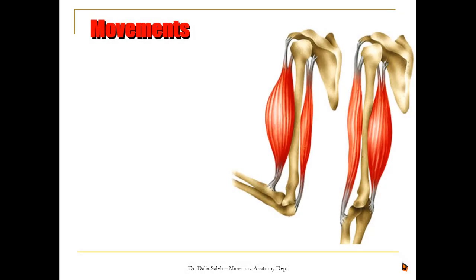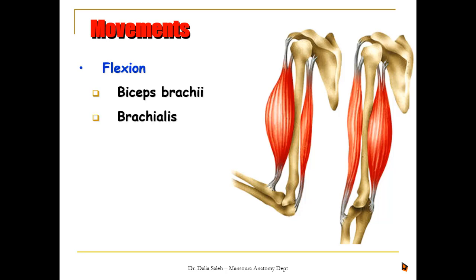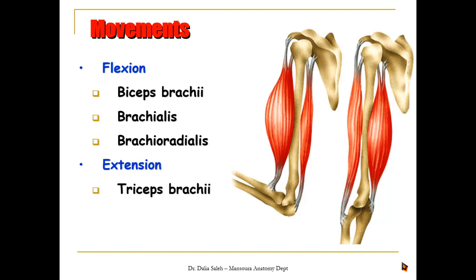For the movements of the elbow joint, we have flexion performed by the biceps brachii, brachialis, and brachioradialis, and extension performed by the triceps brachii and anconeus muscle.